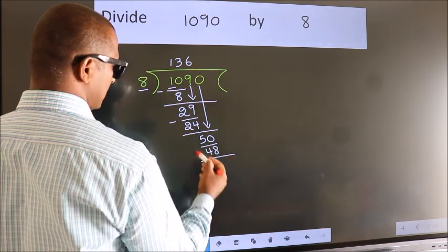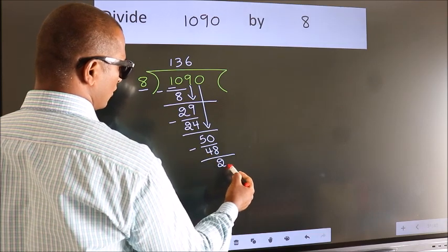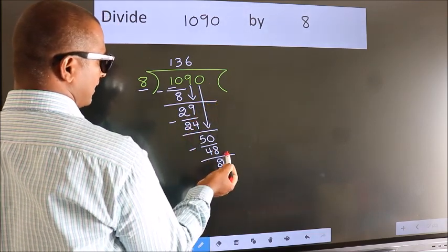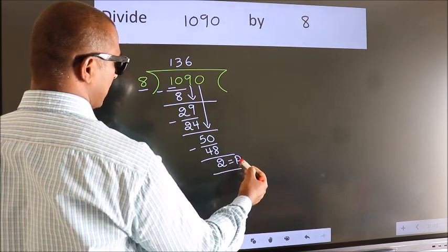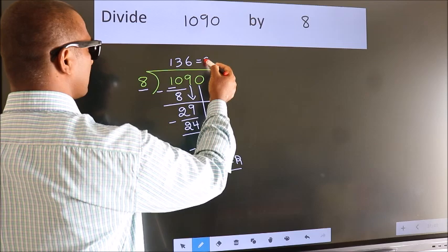Now we subtract. We get 2. No more numbers to bring down, so we stop here. This is our remainder. This is our quotient.